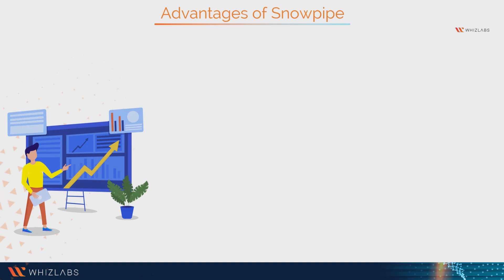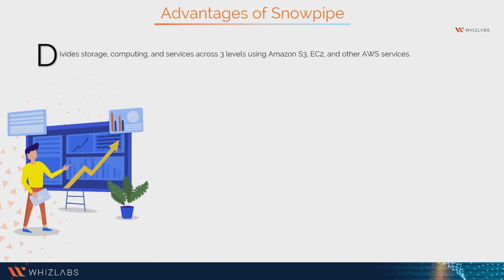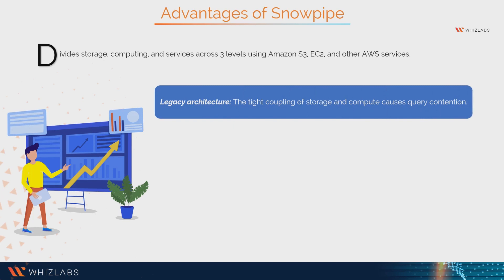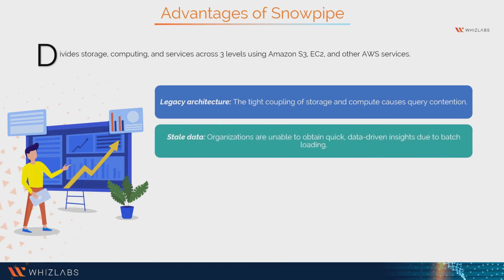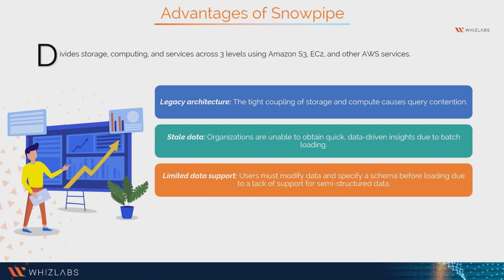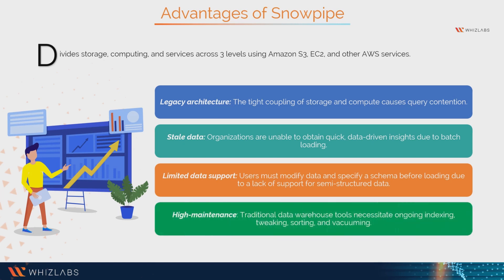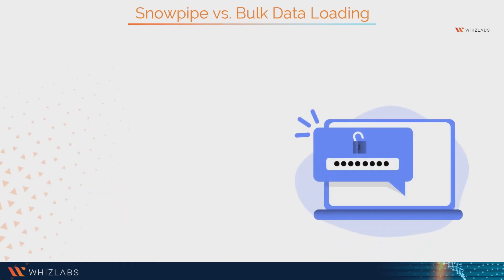Snowflake delivers seamless automated data loading. Snowflake divides storage, computing, and services across three levels using Amazon S3, Amazon Elastic Compute Cloud (EC2), and other AWS services. This helps solve typical data warehousing issues such as: legacy architecture where tight coupling of storage and compute causes query contention and stale data; batch loading which prevents organizations from obtaining quick data-driven insights; limited data support requiring users to modify data and specify a schema before loading; and high maintenance from traditional tools requiring ongoing indexing, tweaking, sorting, and vacuuming.